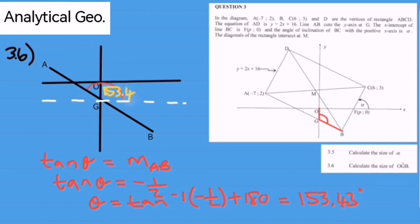Now the angle next to that is 26.57 degrees. Notice the vertically opposite angles, so this one should also be 26.57 degrees.